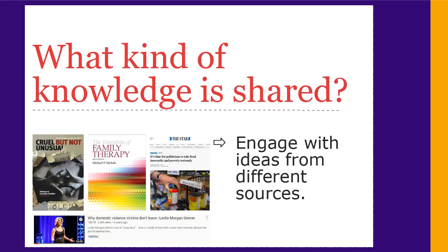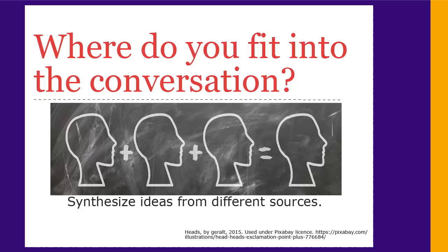What kind of knowledge is shared? Posts for course discussion boards should engage with ideas from different sources, which can include research literature, textbooks, newspapers, videos, and more. These are usually assigned materials, but you might even decide to include additional materials on your own. Of course, you always need to include in-text citations and a list of references. If you're familiar with some of the conversations going on about a topic, you'll be able to synthesize ideas from different sources and respond with your own ideas.